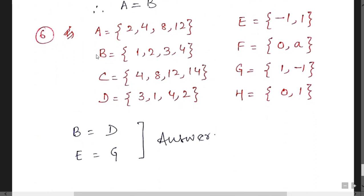The last question of the exercise. You have to identify which set is equal to which one. Set B is clearly equal to D. 1, 2, 3, 4 and 1, 2, 3, 4 and set E is equal to G.